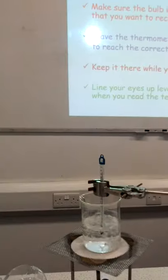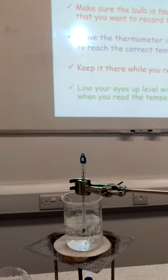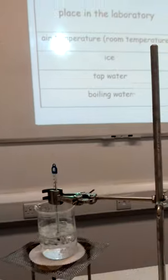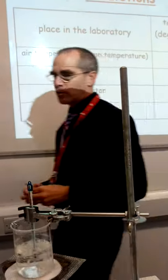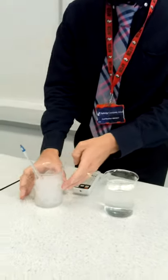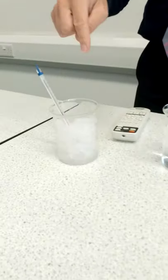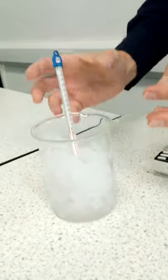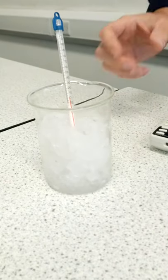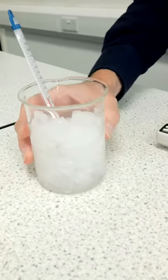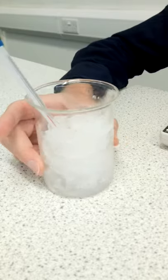The second thing that I'm going to record the temperature of is some ice. So I've got a beaker of ice here and now again, the thermometer has been sitting in this ice for some time. The bulb is in the ice. It's touching the ice and I'm going to leave it in there whilst I read off this, getting my eyes level.